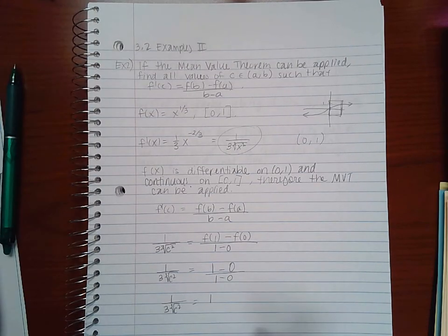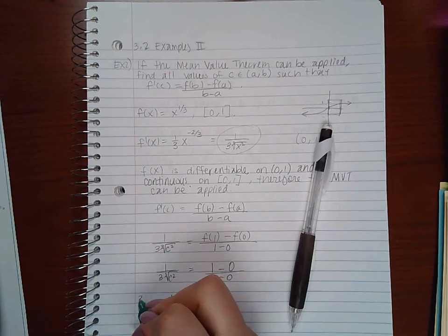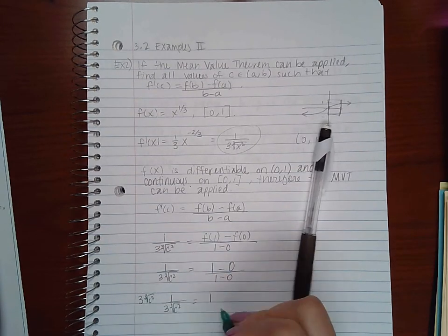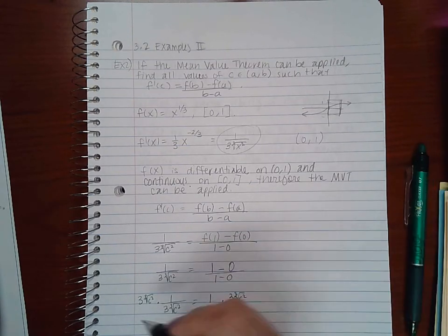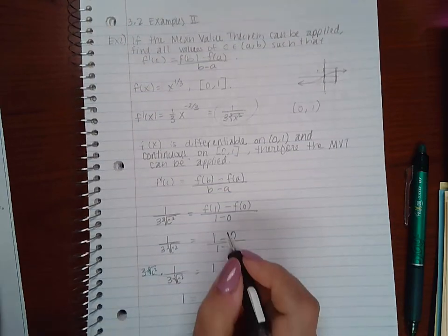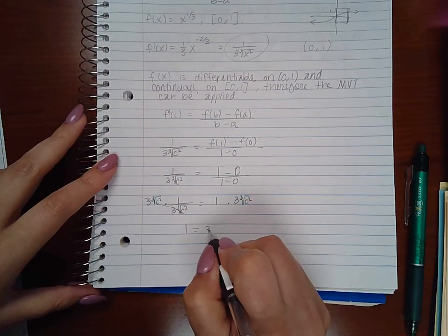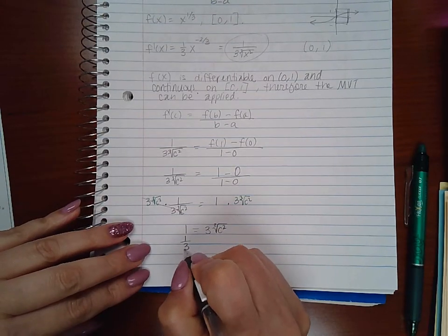So if I multiply both sides by the common denominator, this will reduce here leaving me with 1 equal to 3 times the cube root of c squared. If I divide both sides by 3...